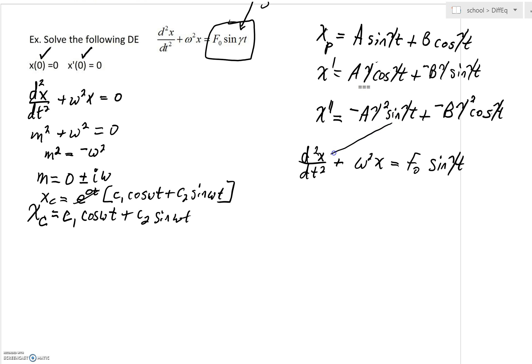and set that equal to f₀sin(γt). As we go ahead, you can see that second derivative is right here.